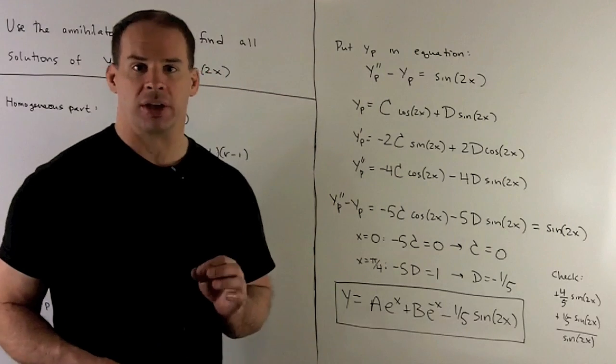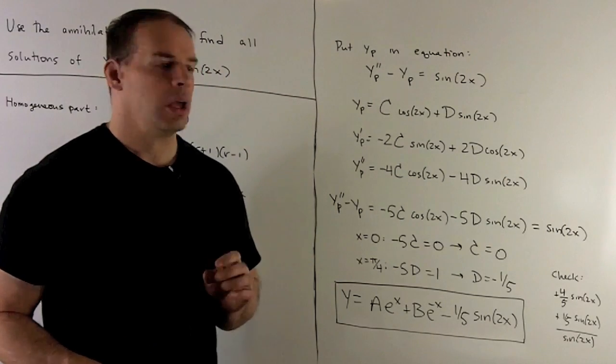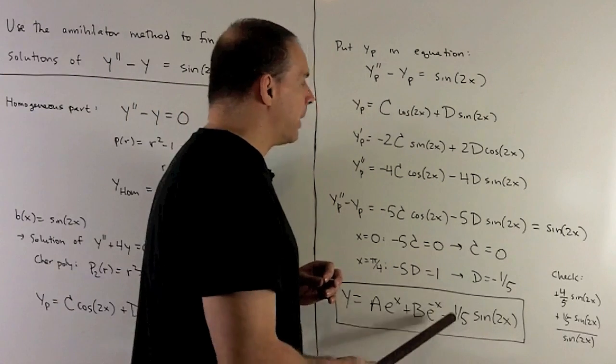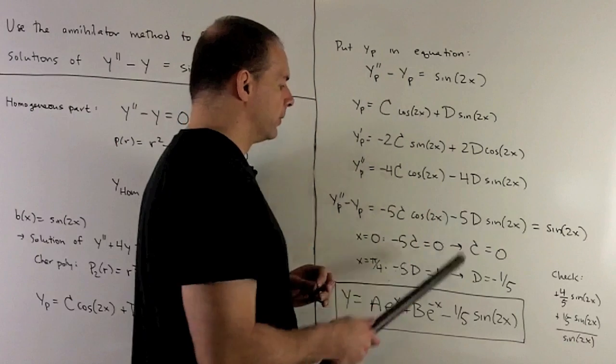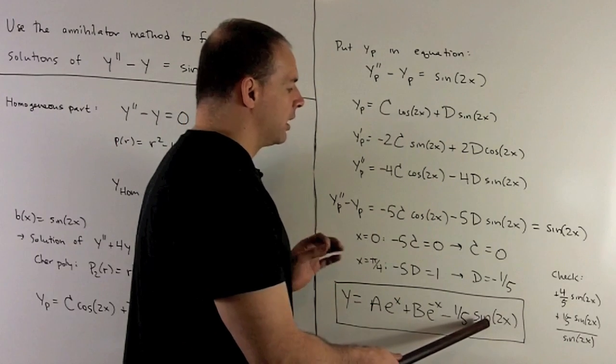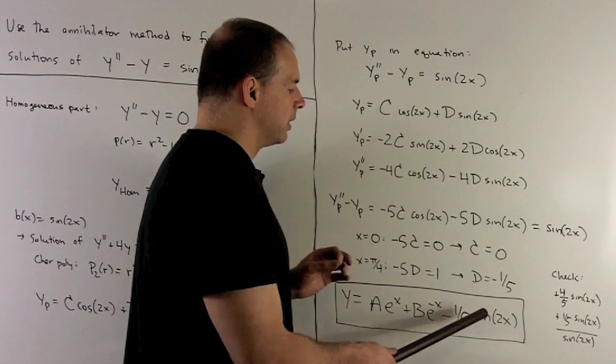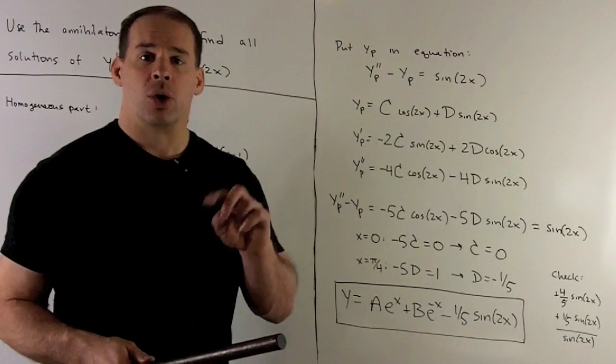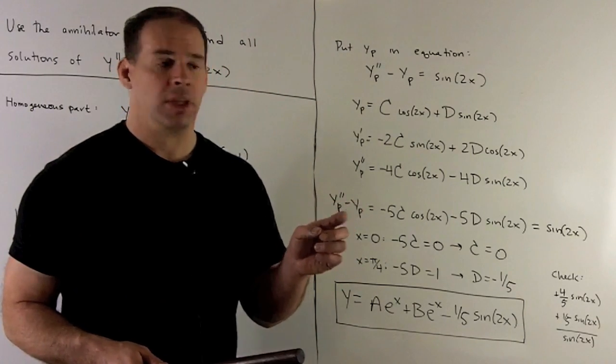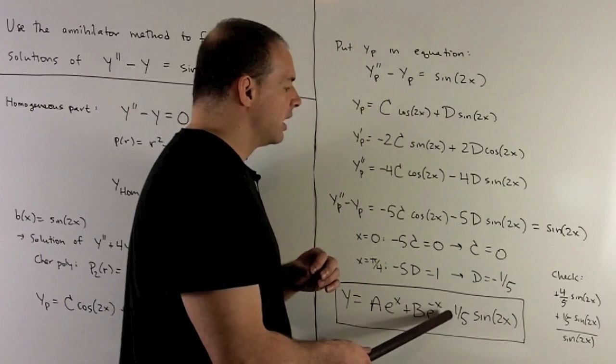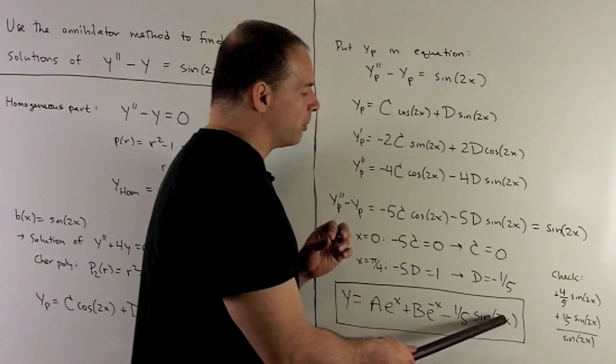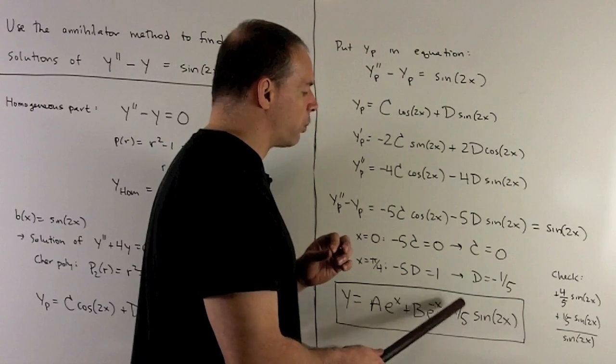Of course, I want to check my particular solution. We're just going to take this part, put it back into the original equation. Now, if I take two derivatives of this, it's going to be chain rule twice, so sine will go to cosine, cosine is going to go to minus sine, so it's going to turn this minus to a plus, and then the two chain rules are going to bring out two, and another two to give me a four-fifths.